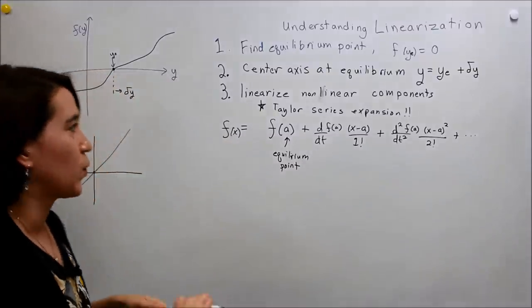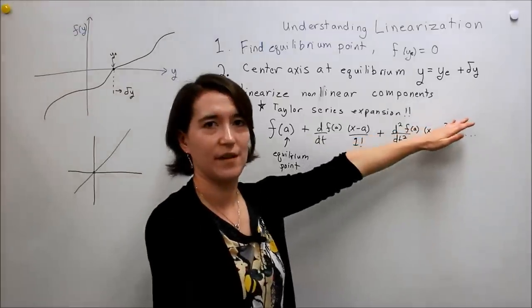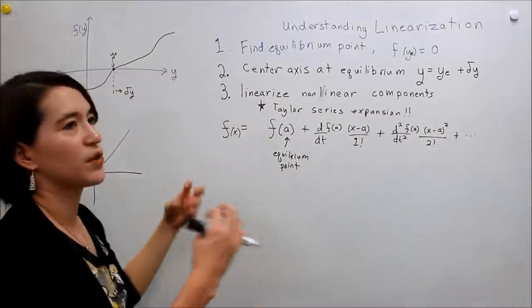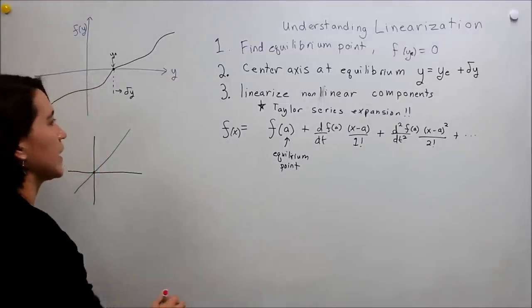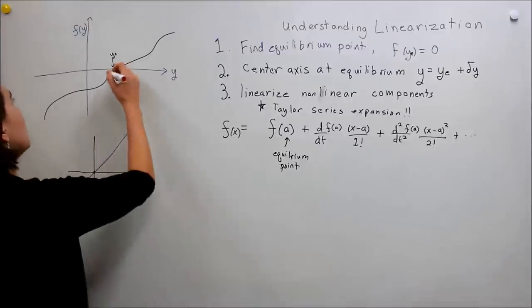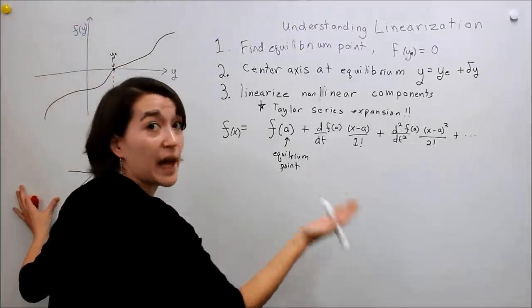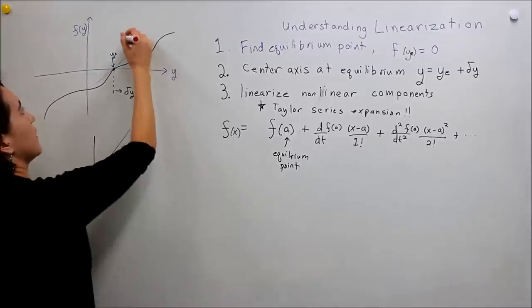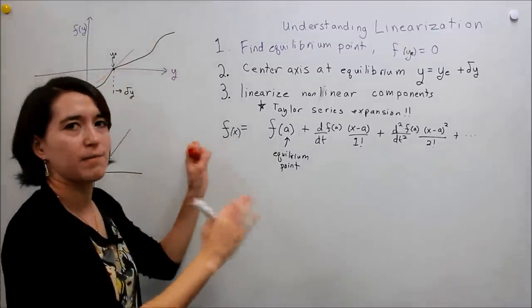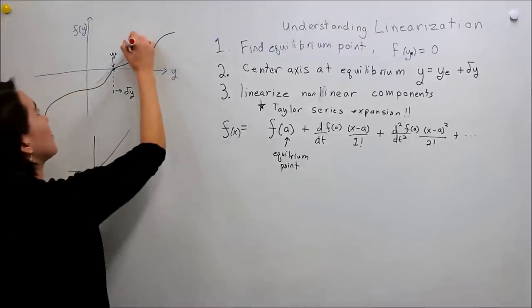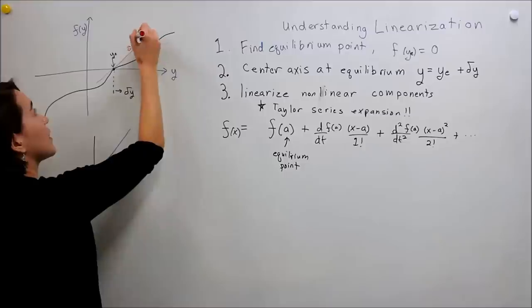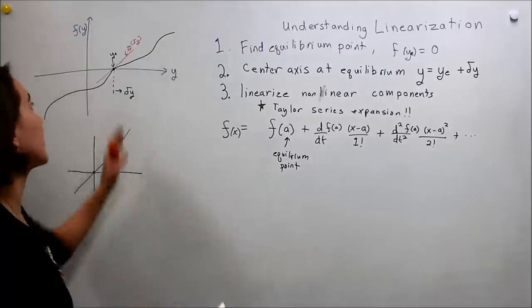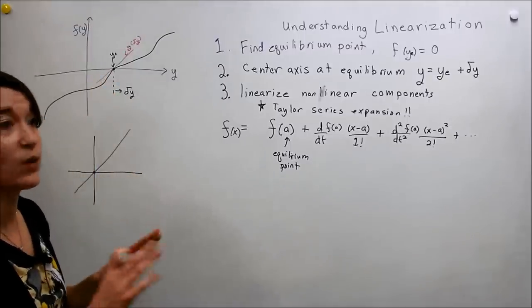For controls, we completely ignore anything above the first order — so above the first derivative. Ours is really an approximation. What we're trying to do is define a new function, and because we're only looking at the first order, it will be a line — a linear approximation. I'll call this g of delta y, our new function that we're approximating around the equilibrium point.